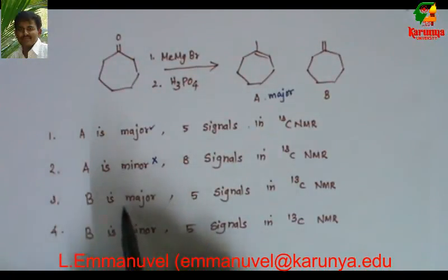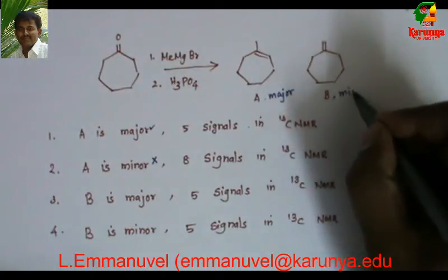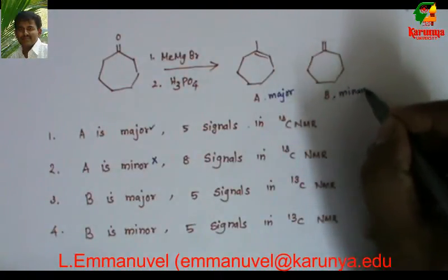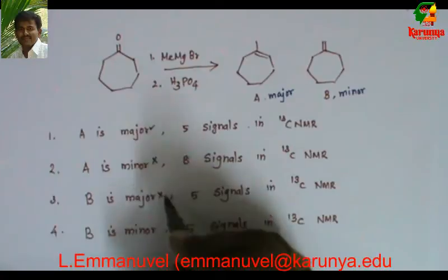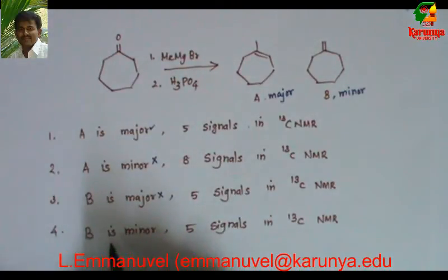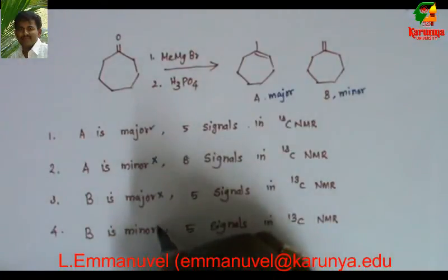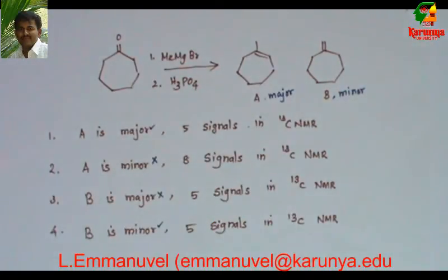The third statement says B is major — B is minor, not major, so this statement is also wrong. The fourth statement says B is minor — yes, B is the minor product. The less substituted olefin will be the minor product, also known as the Hofmann product.